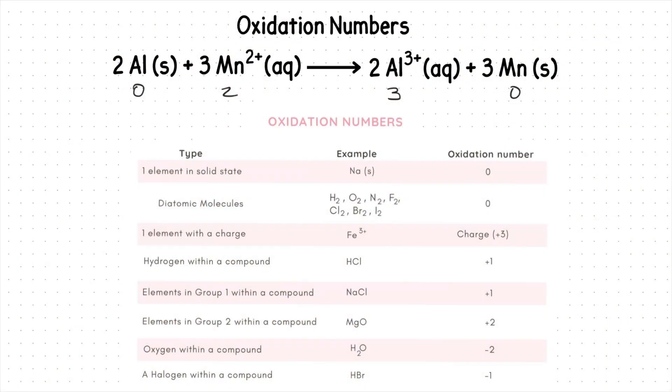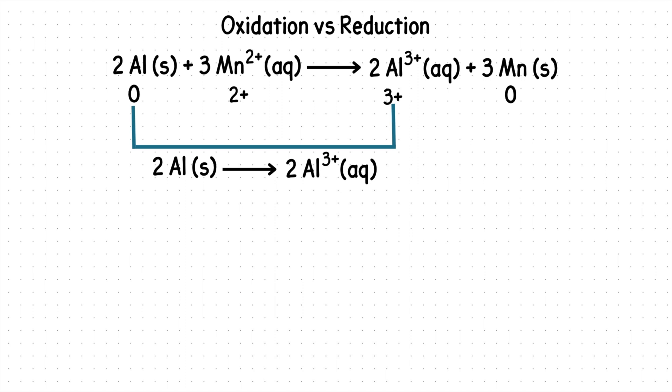we can now write the half reactions by only including the same elements on either side. So aluminum on the reactant side will go here, and the other aluminum on the product side will go here. This is the same concept for manganese.